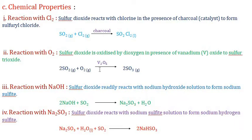Third, reaction with sodium hydroxide: SO2 readily reacts with NaOH to form sodium sulfite and water, because SO2 is acidic in nature. Fourth, reaction with sodium sulfide: when sodium sulfite reacts again with water and SO2, it forms sodium hydrogen sulfite.